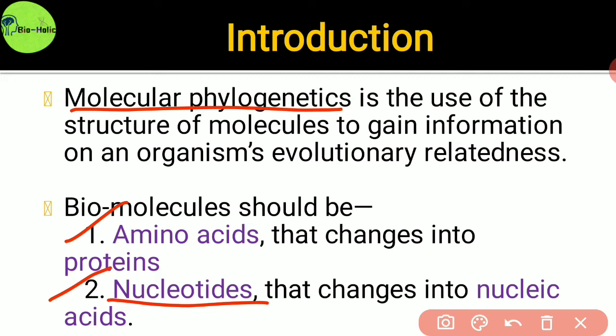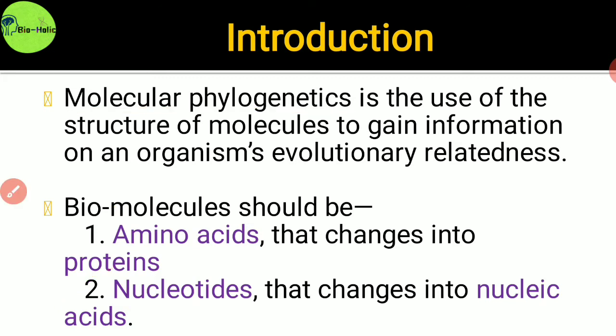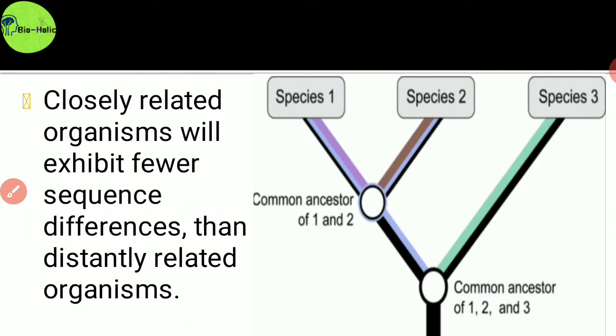Mainly non-coding regions of DNA — that means regions which will not produce a polypeptide chain — are often used to evaluate evolutionary relatedness. So closely related organisms will exhibit fewer sequence differences than distantly related organisms.